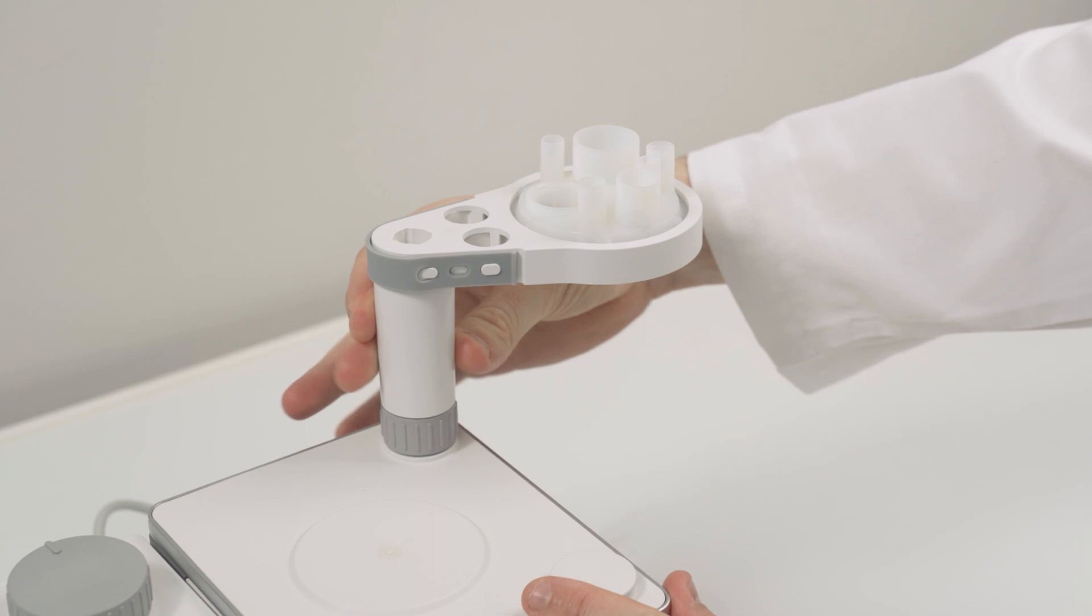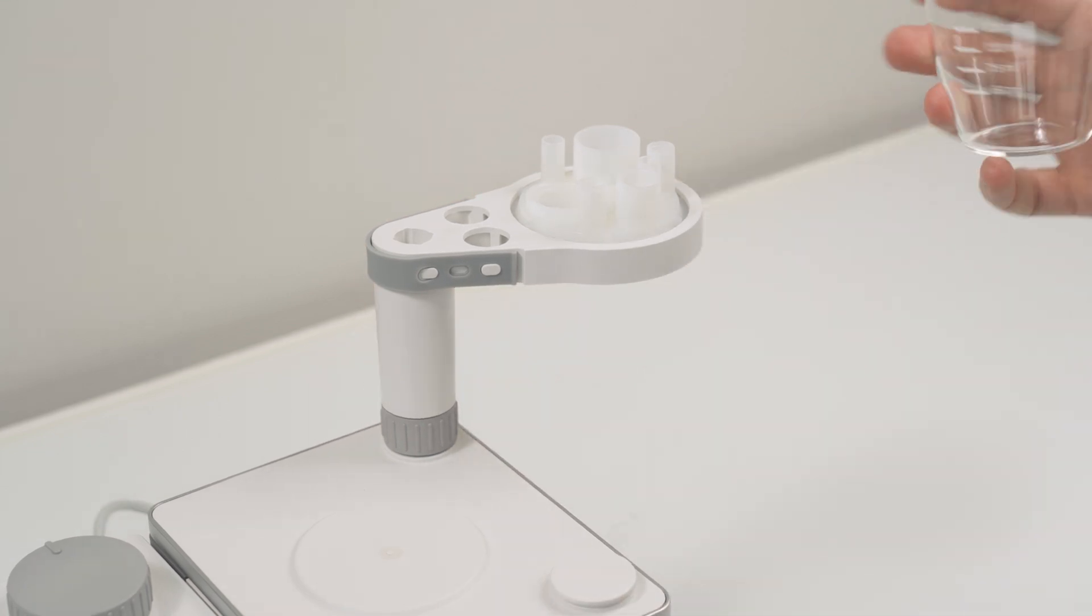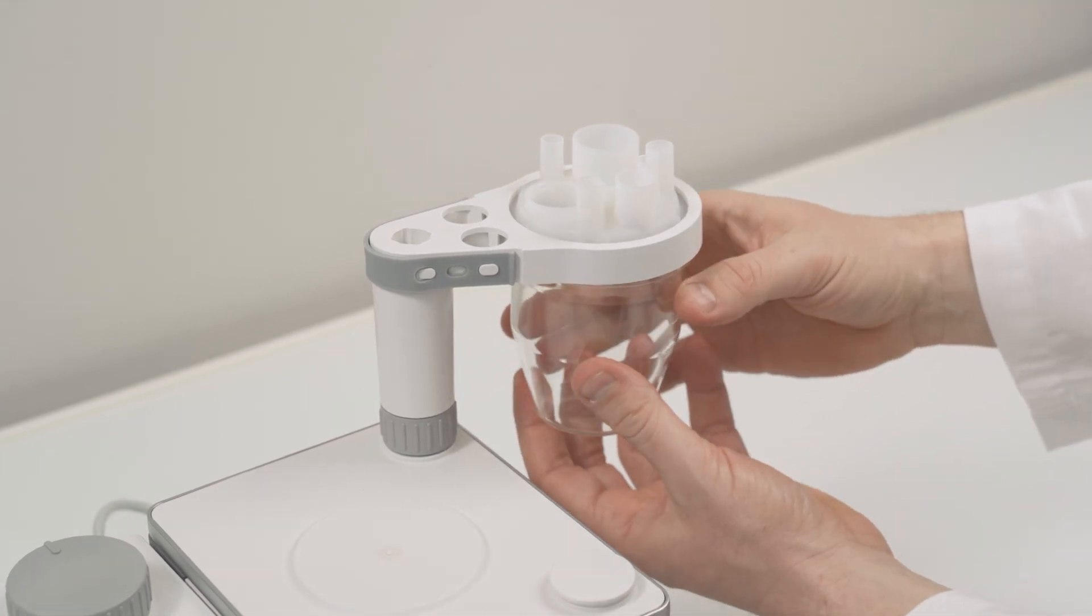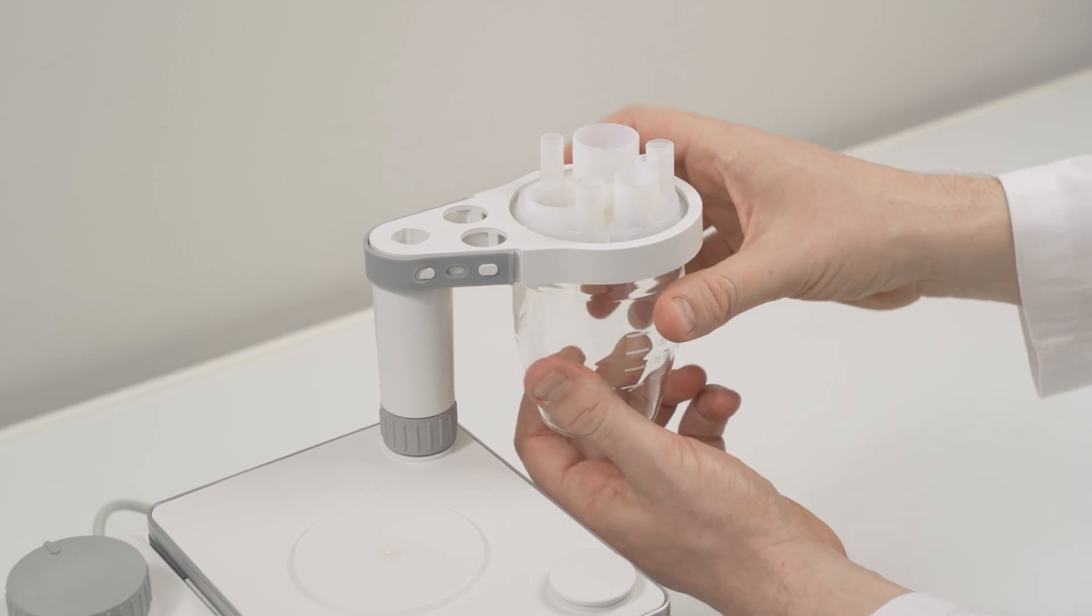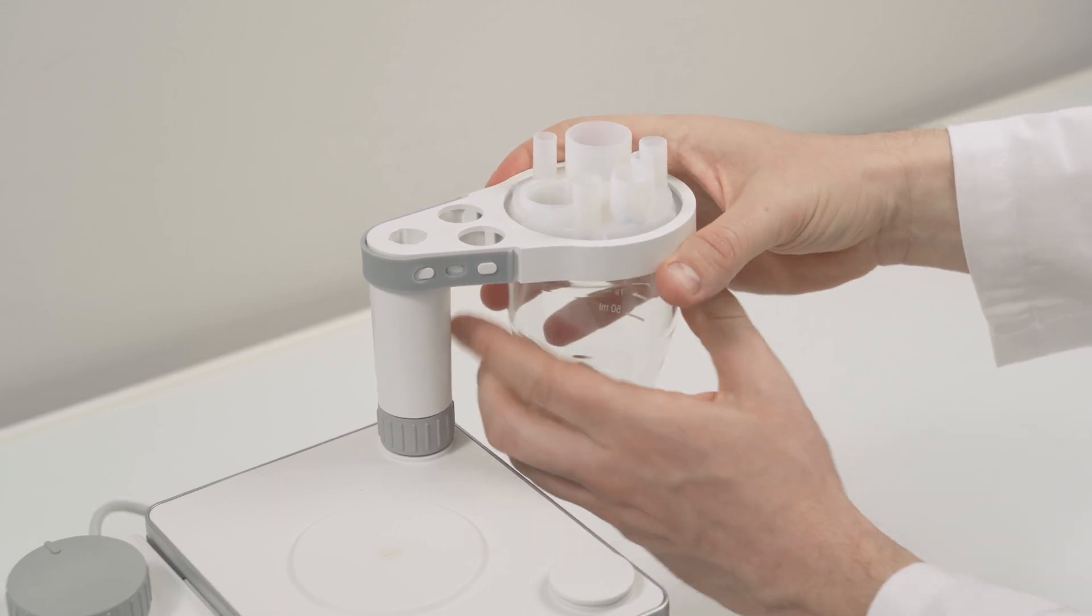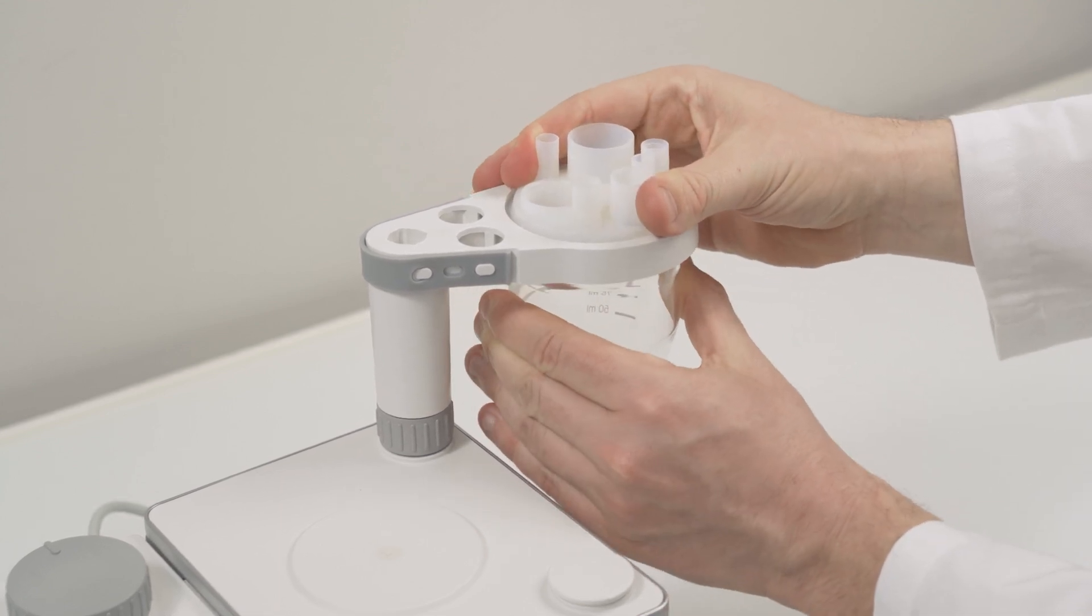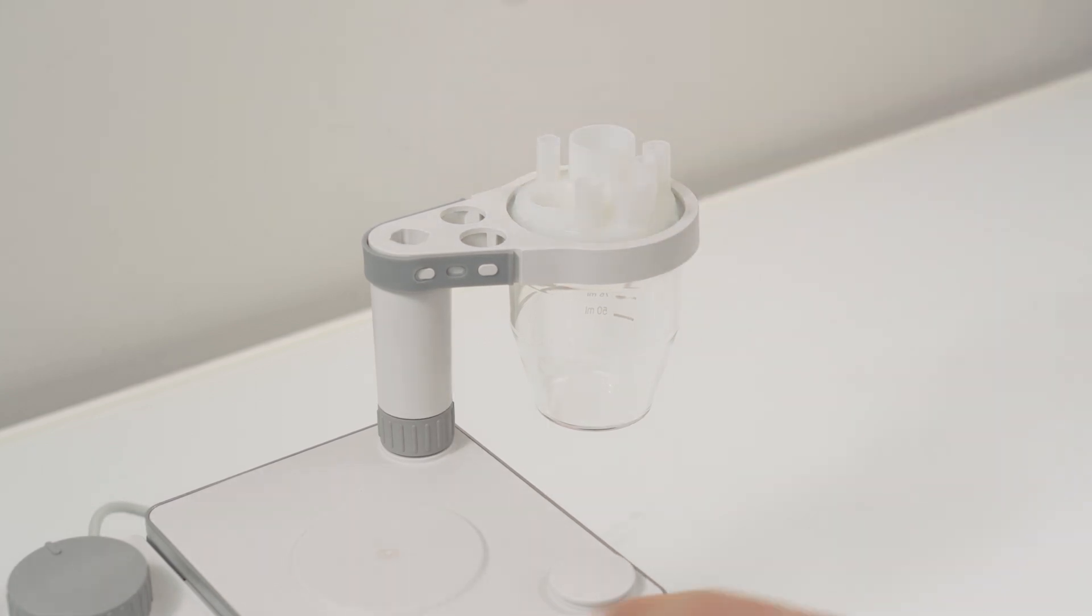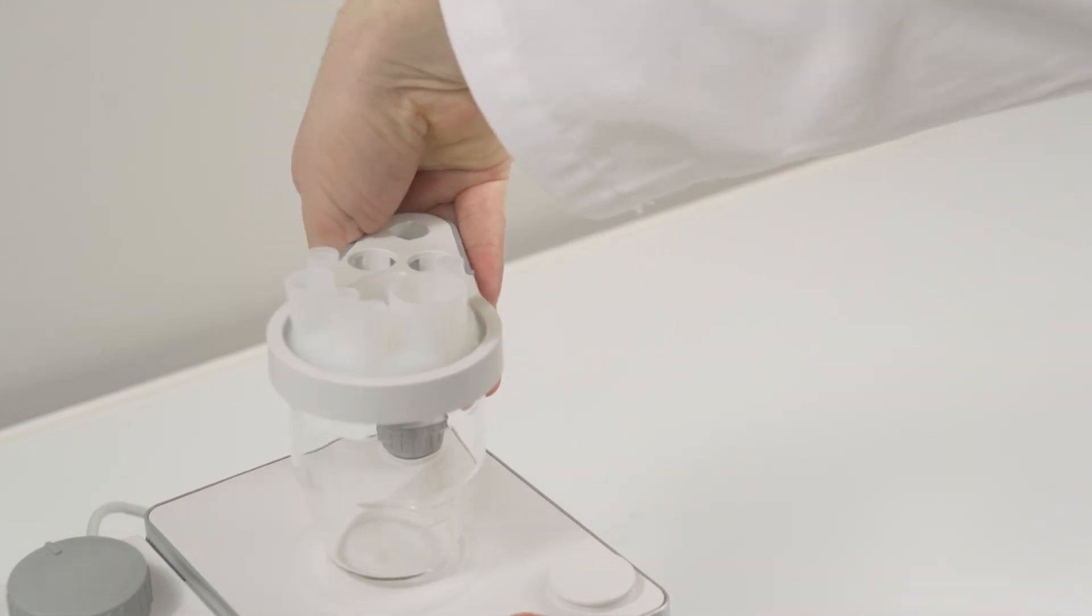Swivel the arm out and attach the glass vessel by holding the adapter plate with one hand and turning the vessel anti-clockwise. For the actual measurement afterwards it's important that the whole titration cell is sealed against humidity. So make sure that the vessel is properly fastened and the sealing is tight.